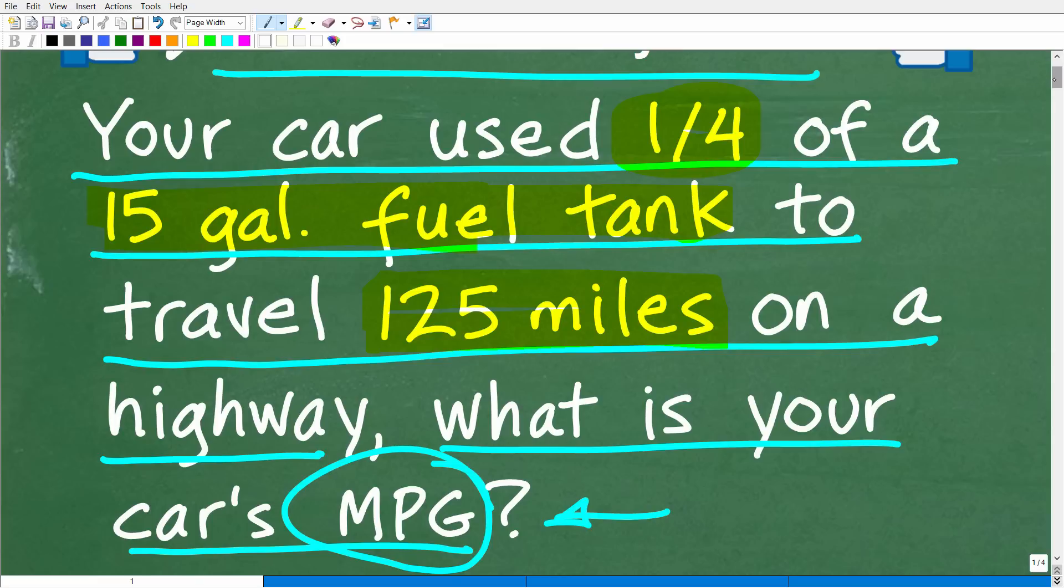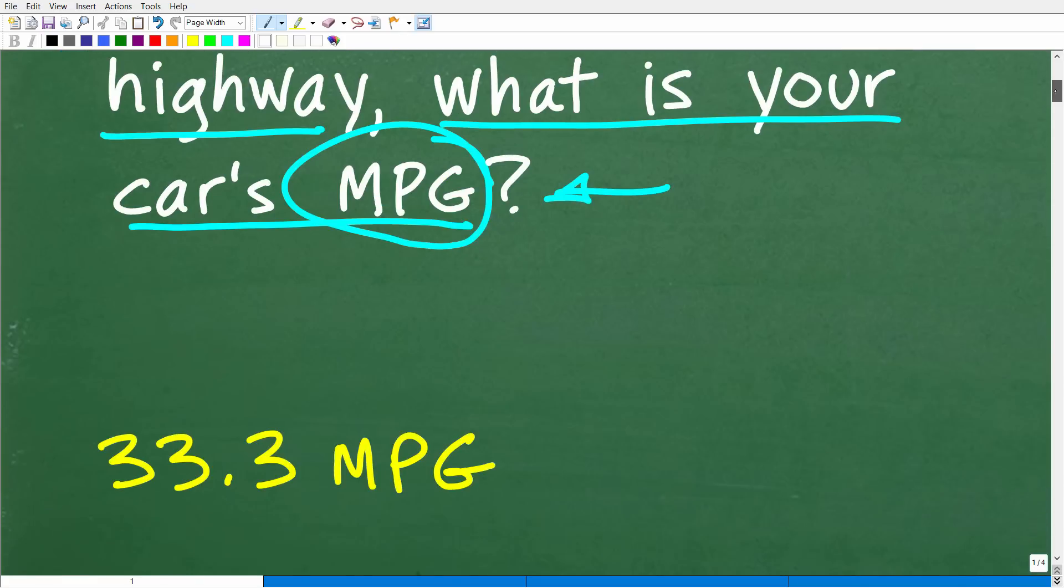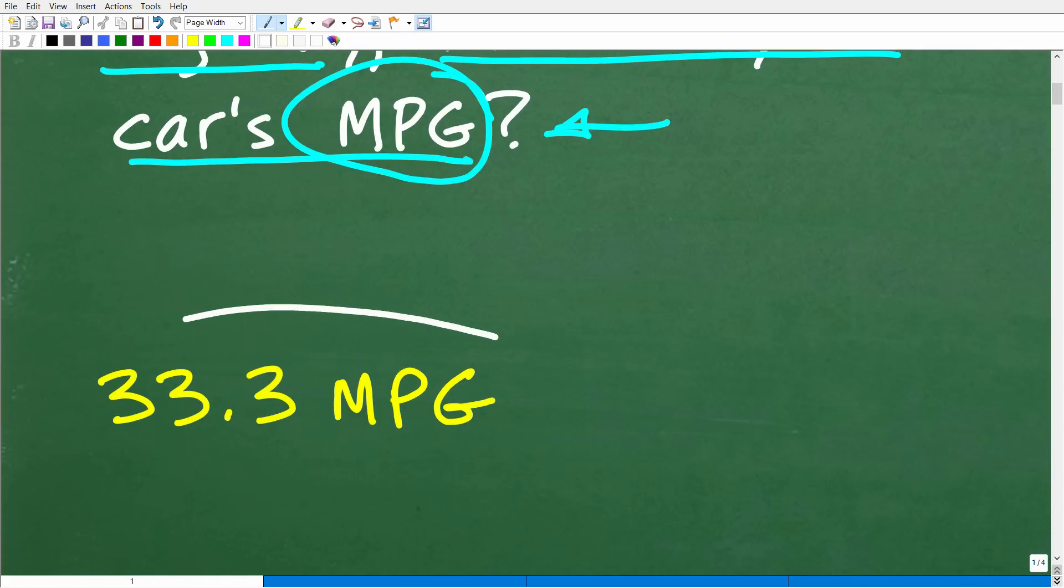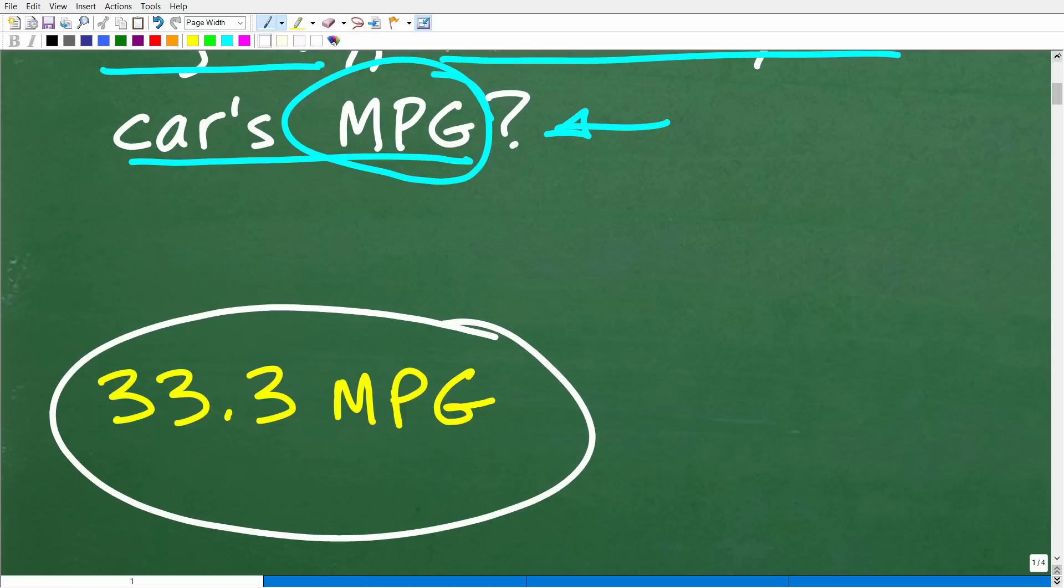All right, so the correct answer is 33.3 MPG, or miles per gallon.